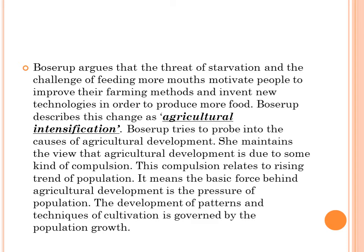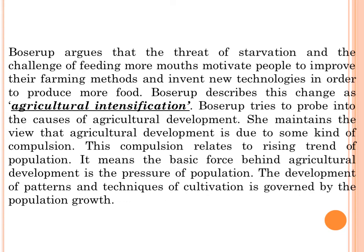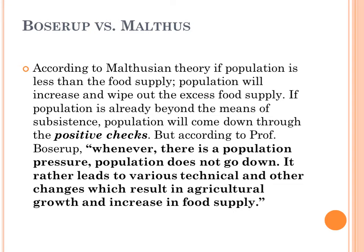This theory has some differences from the Malthusian theory. Malthus says that if population is less than food supply, population will increase to wipe out the excess food supply; and if population is more than the means of subsistence, people will adopt positive checks to bring population back to the level of food production. So in the Malthusian theory, it is the food supply which drives the population growth rate.